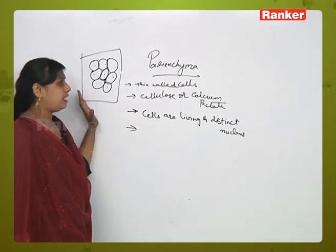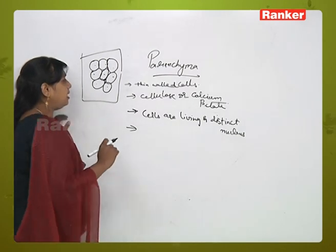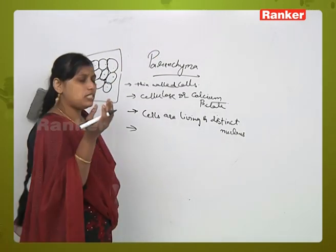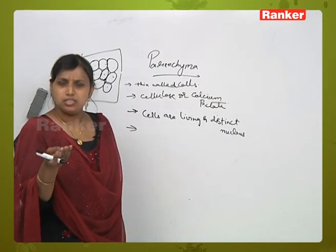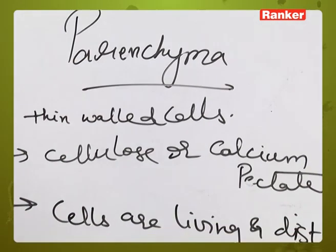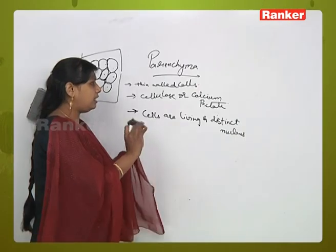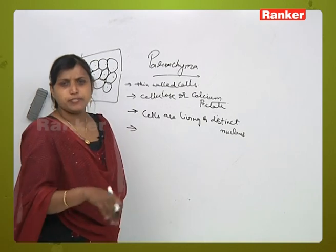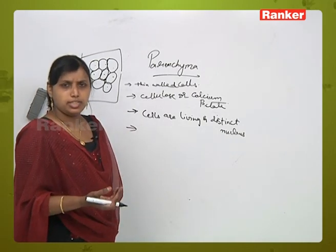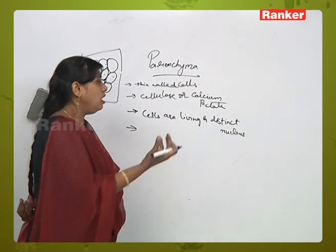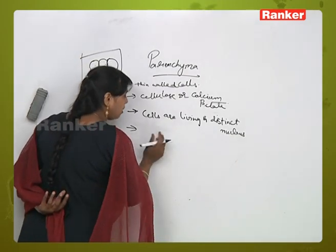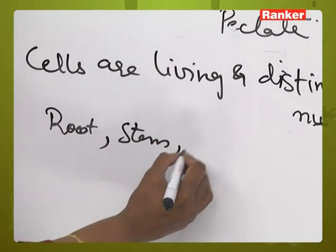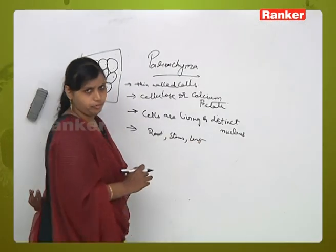The parenchyma cell may be oval, spherical, rectangular, or cylindrical in shape. This parenchyma tissue constitutes the ground tissue — it is present in all structures: the cortex, stem internal structure, and root. The ground tissue in the TS of a stem, root, and leaf is all made up of parenchyma.